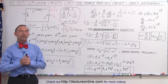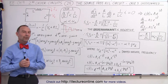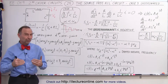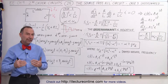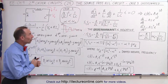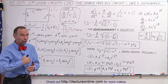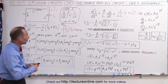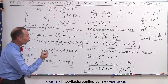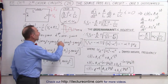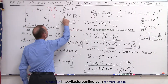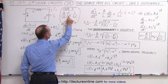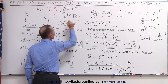Welcome to iLecterOnline. Now we're finally ready to tackle case number three, the underdamped case. We're talking about the source-free RLC circuit, but in this case the resistor is so small that R over 2L, quantity squared, is smaller than 1 over LC.